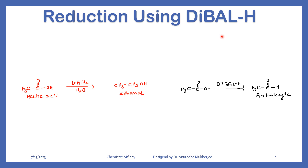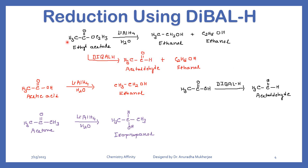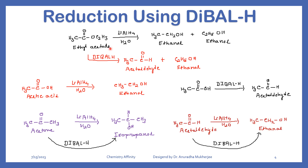DIBAL is a milder reducing agent than lithium aluminum hydride. We have seen lithium aluminum hydride converts acetic acid to a primary alcohol — ethanol. But if we use DIBAL, the reaction stops at the aldehyde, so we get acetaldehyde. The same thing takes place with ethyl acetate: the acetic acid part converts to acetaldehyde and the OC2H5 gives ethanol.